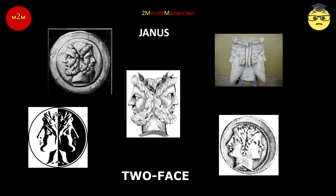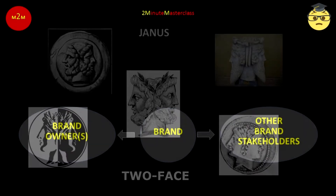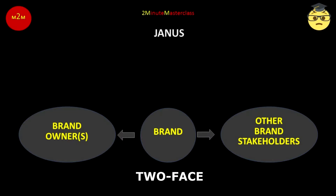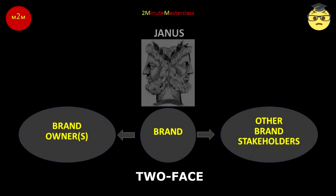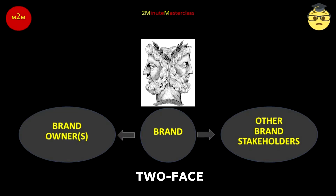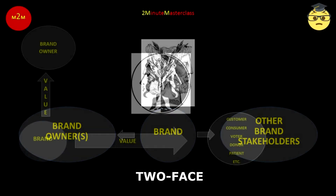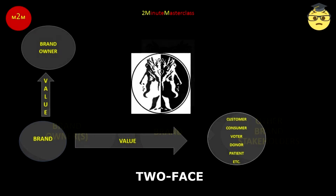And the subject of many two-faced statues and coin etchings. As a brand delivers value, it too faces in two directions. A brand delivers value to two different categories of stakeholder — its owner on one hand, and its users, consumers, customers, voters, donors on the other. The face it presents to the one is very different to the face it presents to the other.